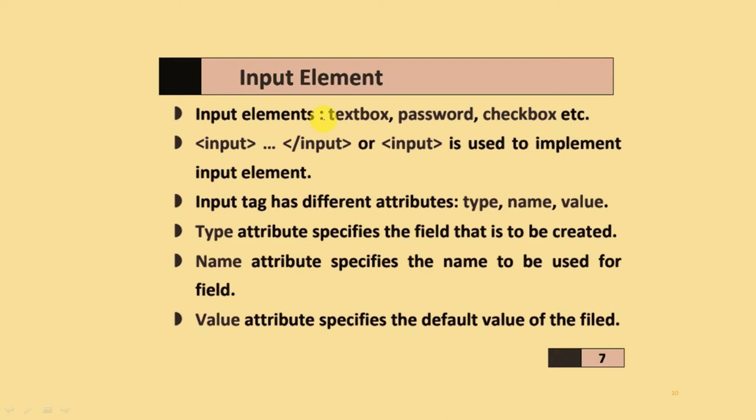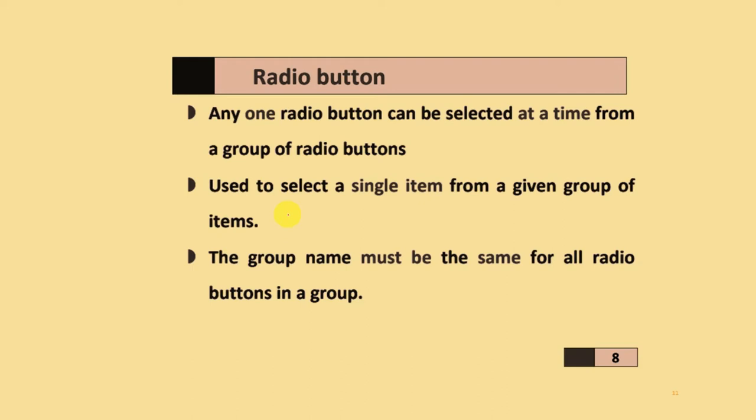Input elements are used to create text boxes, different types of passwords, checkboxes, and more. When you create an input element, use the input tag. The input element has different attributes: type, name, and value. The type attribute specifies the field to be created, the name attribute specifies the name of the field, and the value attribute specifies the default value of that field.